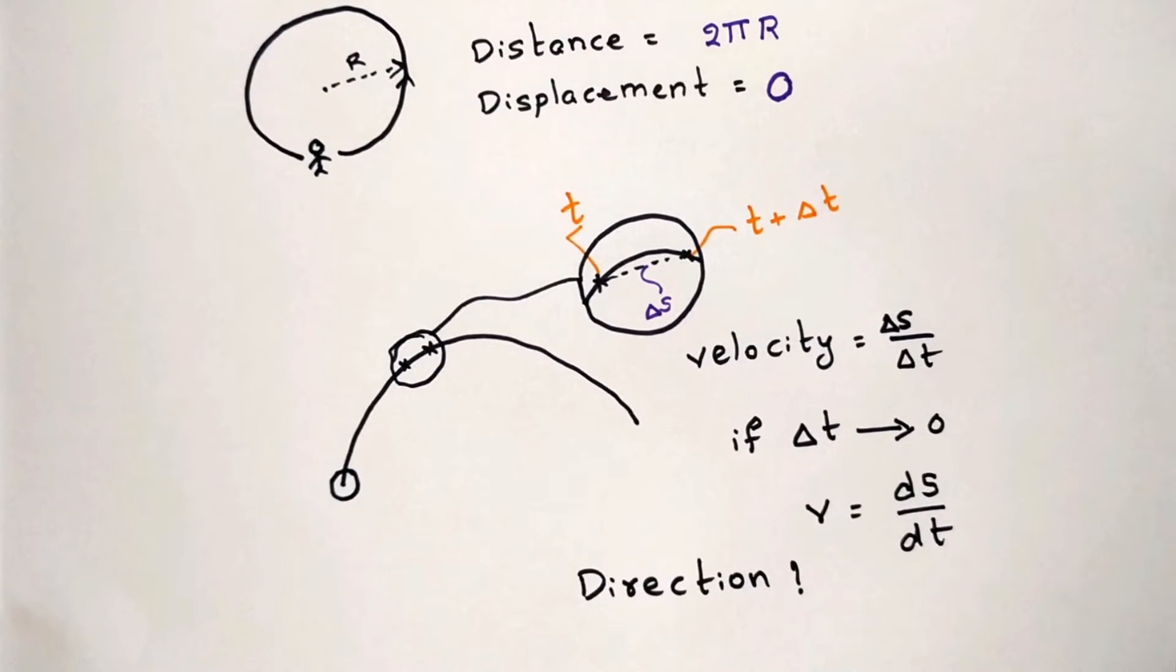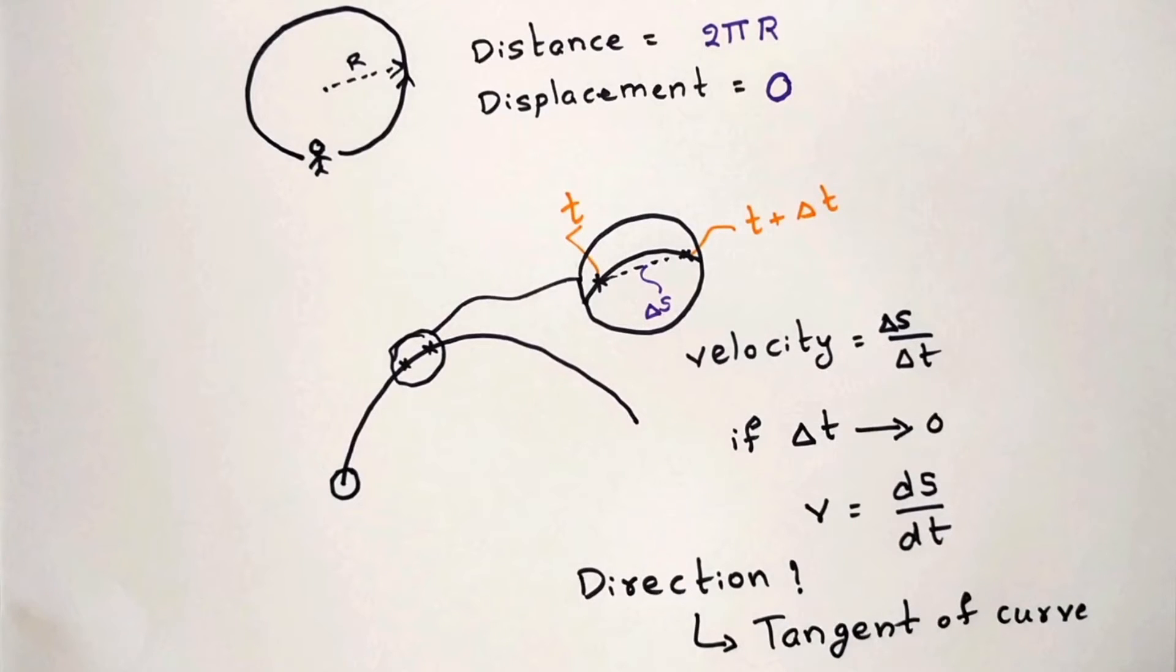But in order to find the direction of the velocity, let's consider that delta s is tending to zero. Then you can see that it is eventually becoming the tangent of the curve. So at any particular instant in a curved path, the velocity direction is given by the tangent at that point.